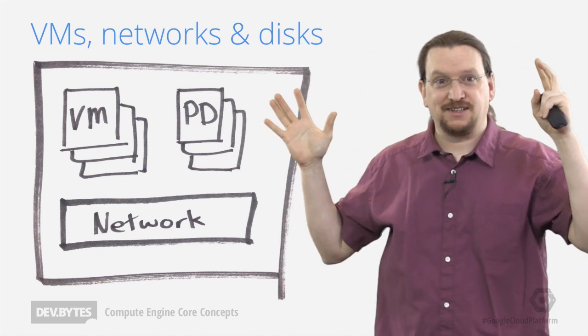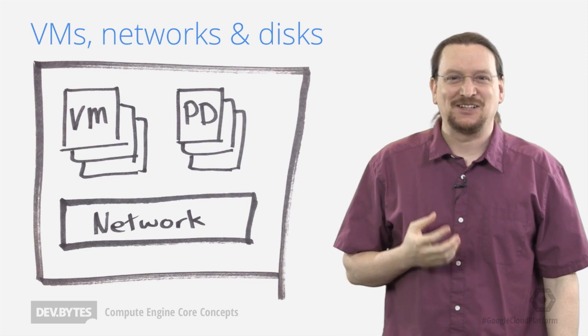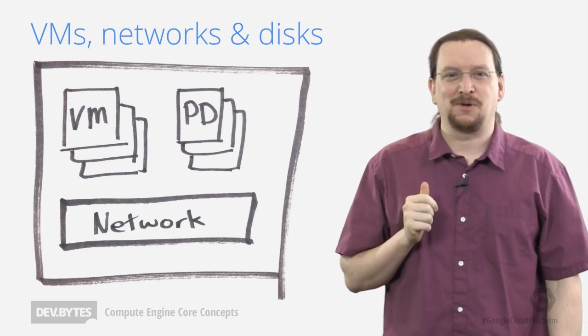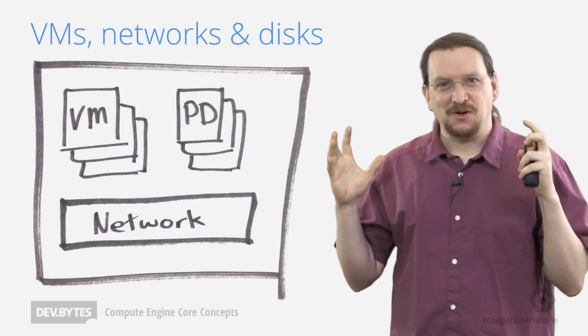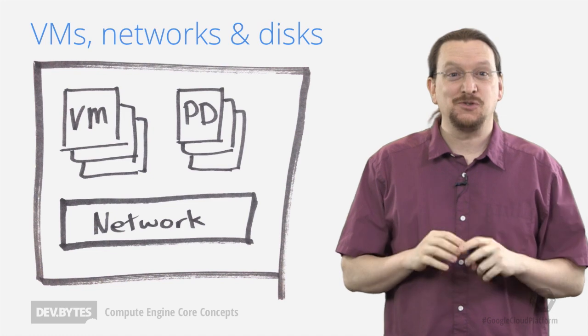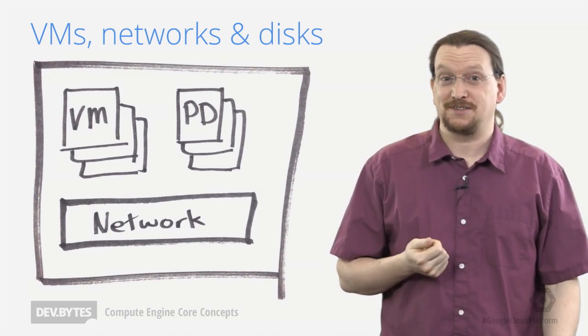So you start with a project, and it's an administrative grouping of Google's APIs. And we have a lot of APIs, including other services for compute and storage. But right now, we're going to focus on Compute Engine. And here, we can think of the project as your virtual private cluster to use for whatever you need. Inside the project, we have virtual machines, we have networks, and we have disks.